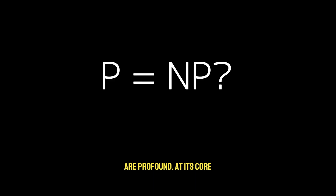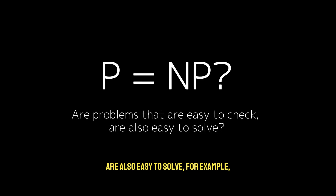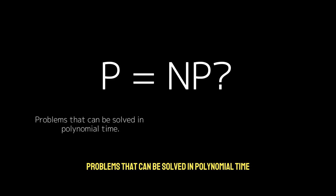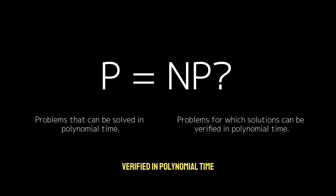At its core, this question asks whether problems that are easy to check — for example, verifying a solution is fast — are also easy to solve — for example, finding the solution is fast. In formal terms, P refers to problems that can be solved in polynomial time, while NP refers to problems for which solutions can be verified in polynomial time.